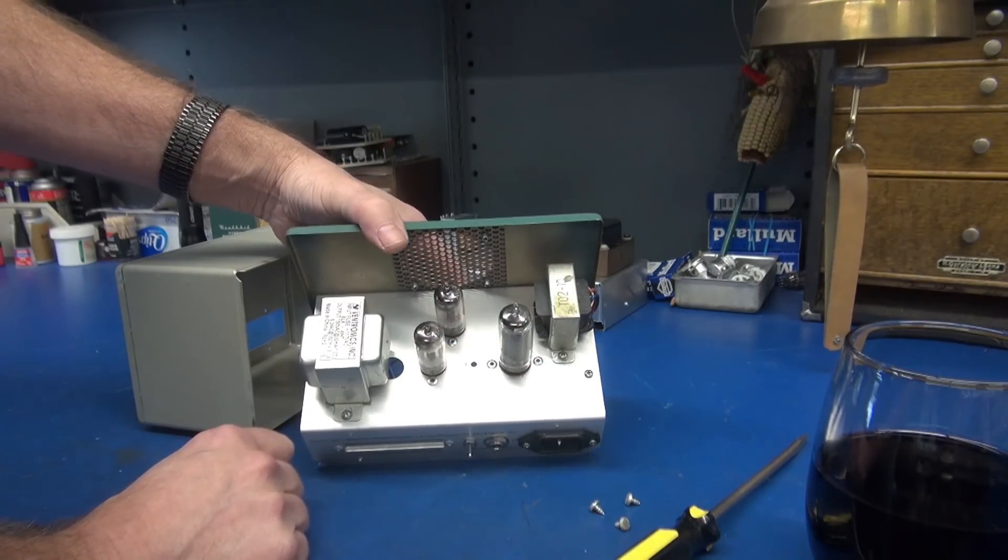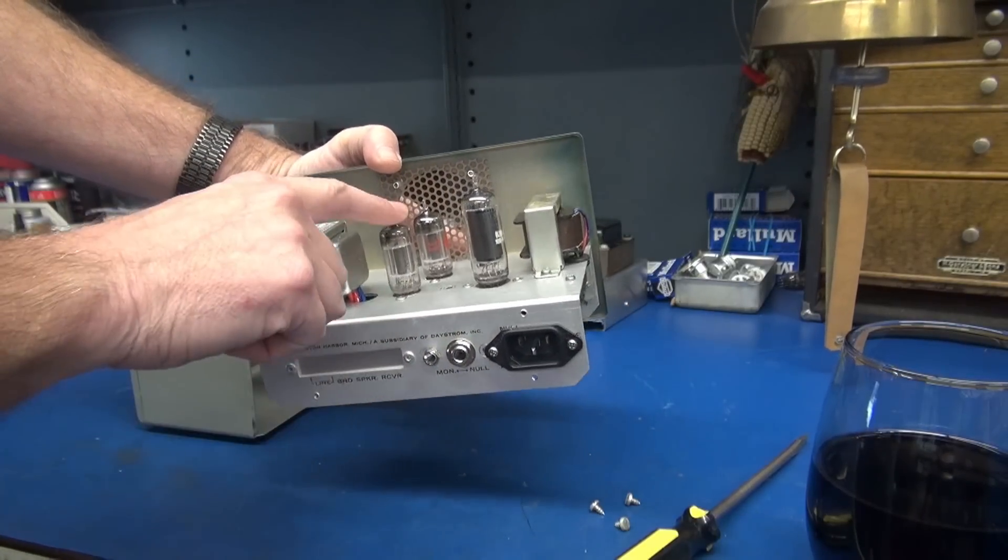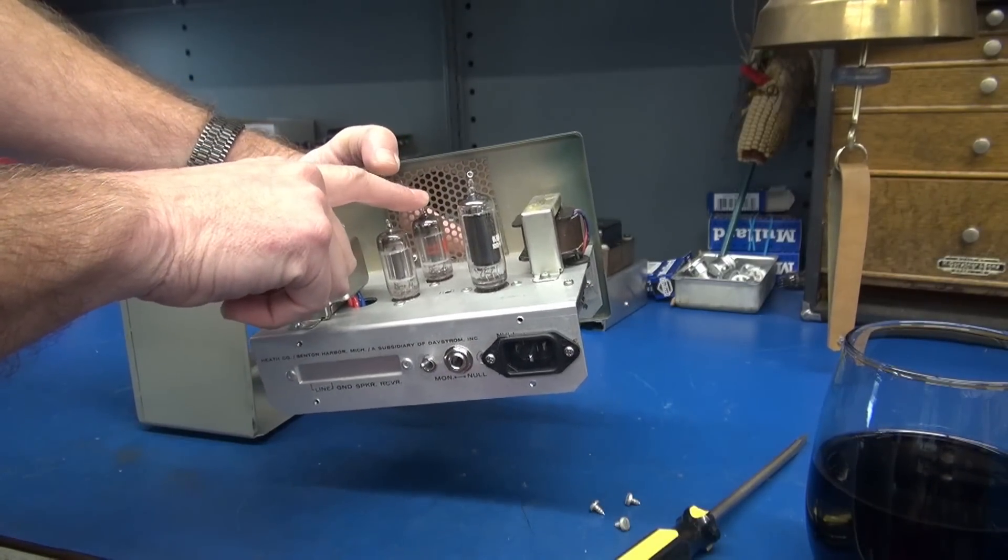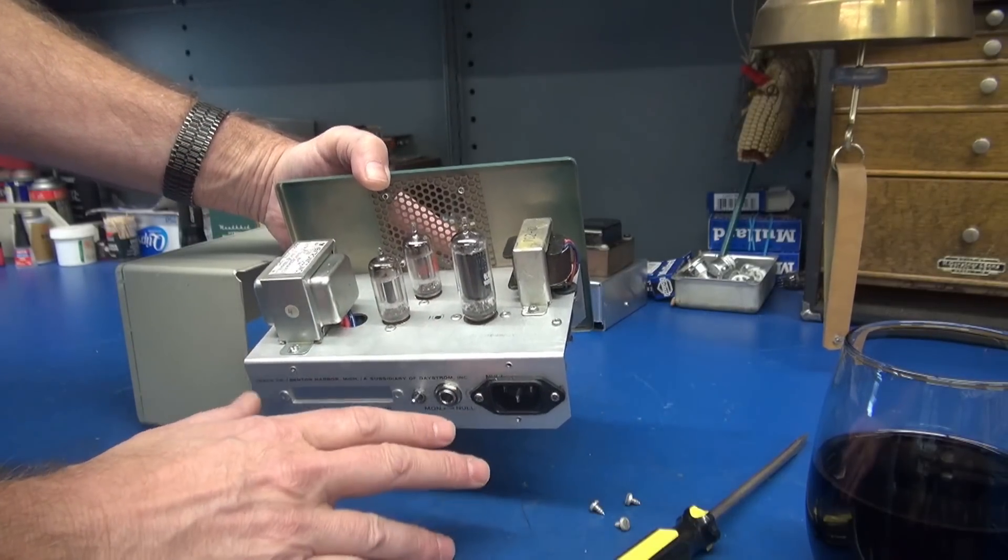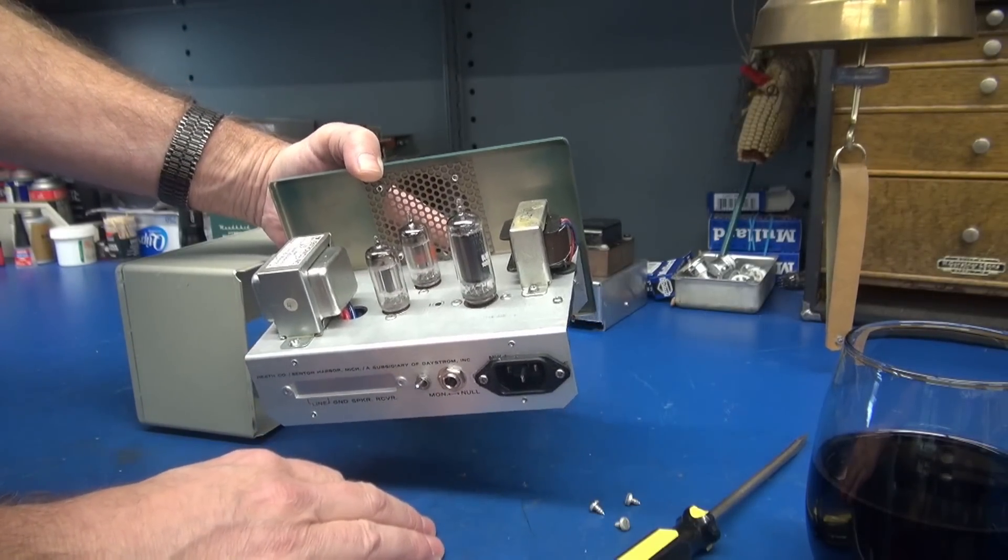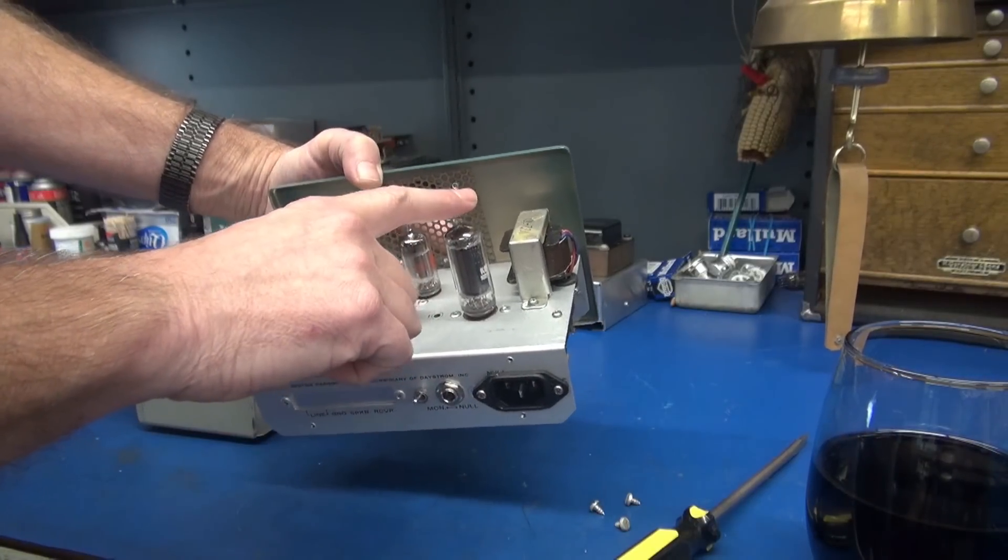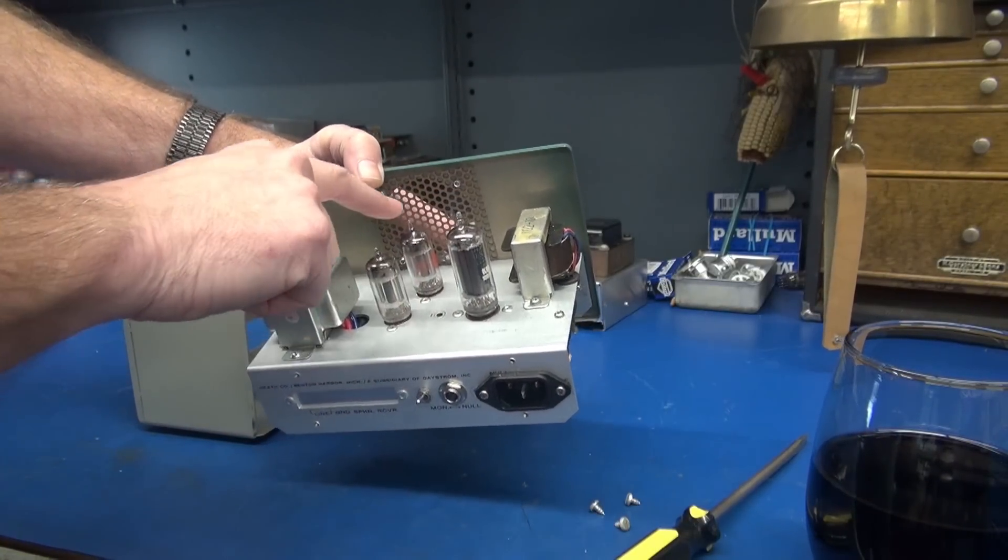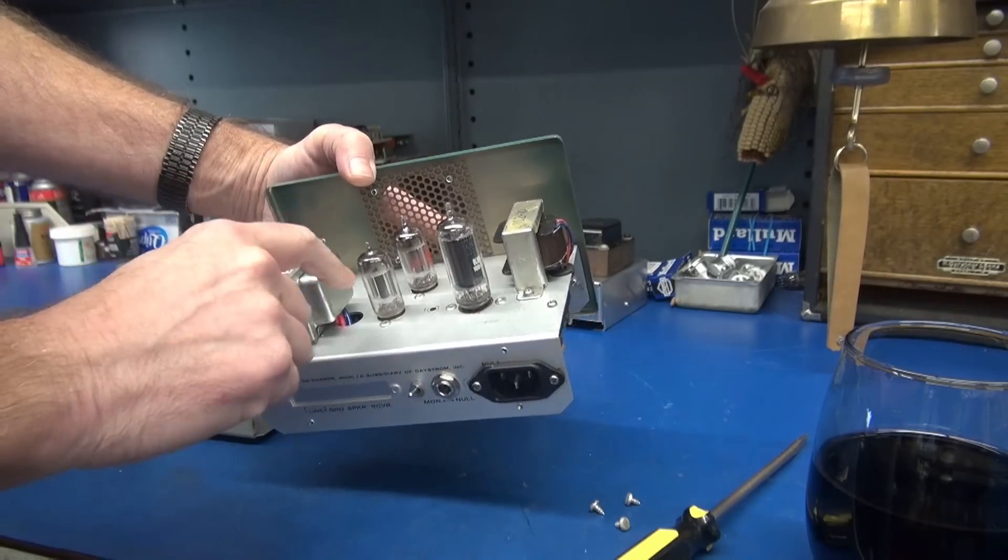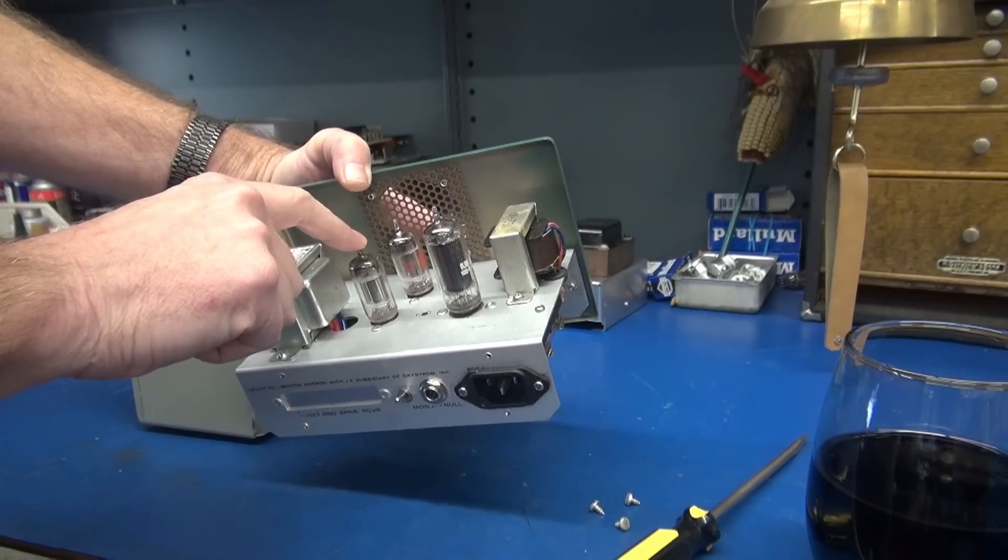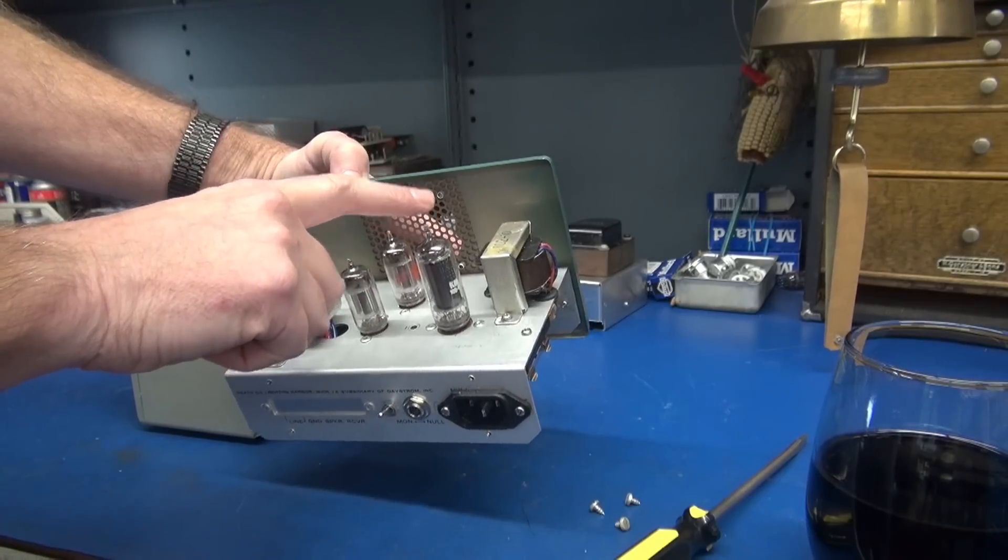I elected to build this using a pair of 6AV6 tubes because I'm trying to show you how to construct these amps for under five dollars worth of tubes. If this had been a 6BQ5 and a 12AX7, you'd probably have 35 dollars just in tubes. You can get these 6AV6s for about a buck and these 6CL6s for about three dollars, so it's quite the cost savings.